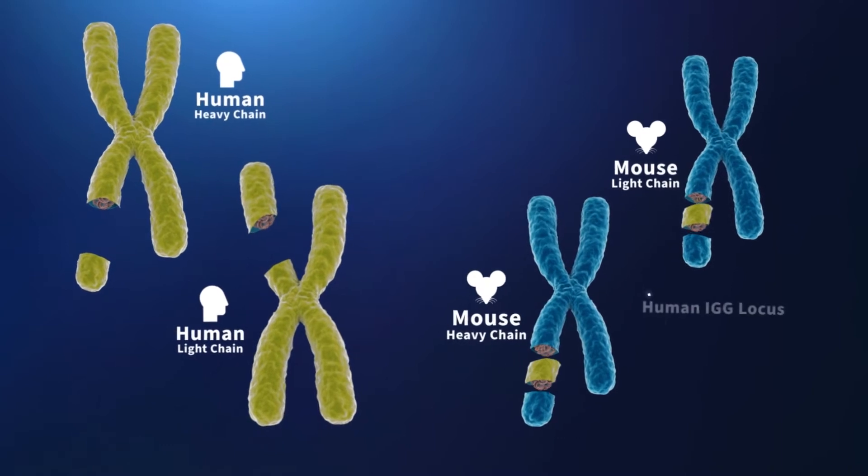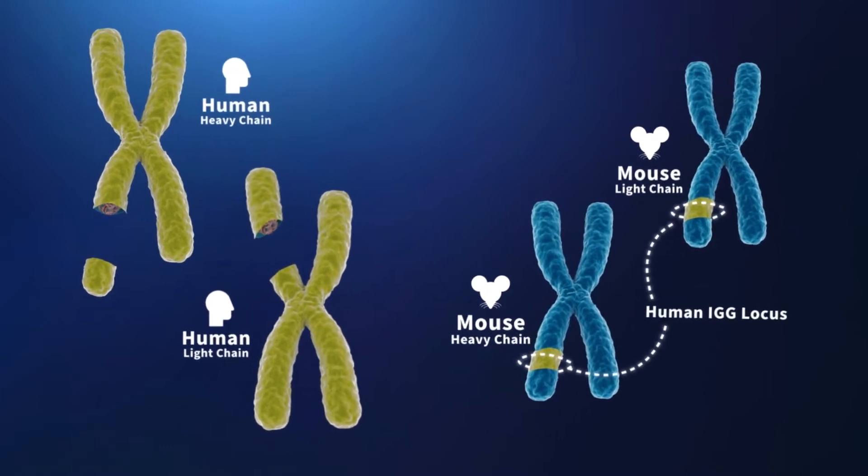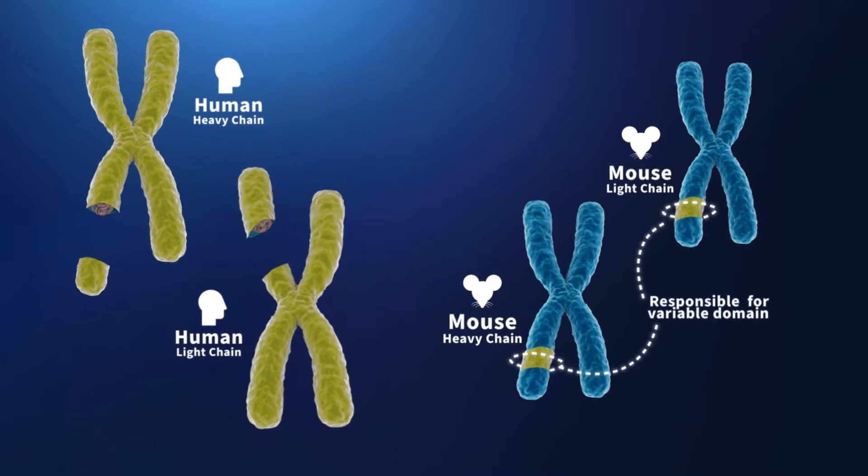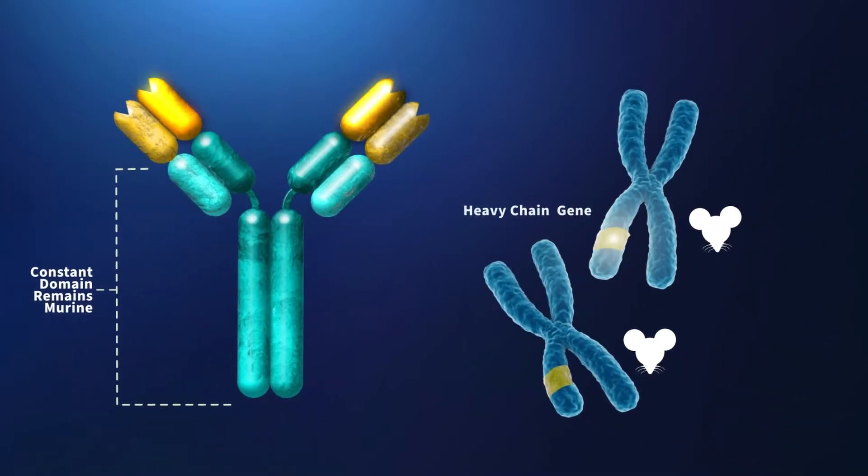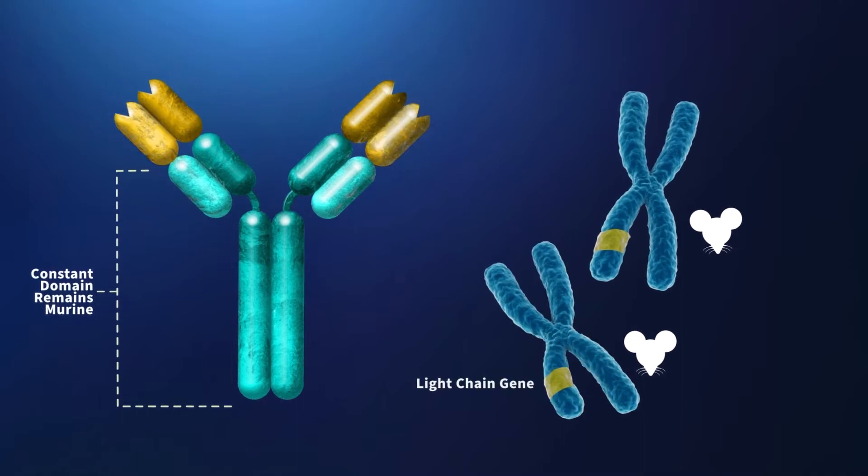This allows for more comprehensive coverage compared to other commercially available transgenic mice. The constant domain is retained in RUNmice to allow for normal immune system development and proper B-cell signaling that is identical to that of a wild-type mouse.